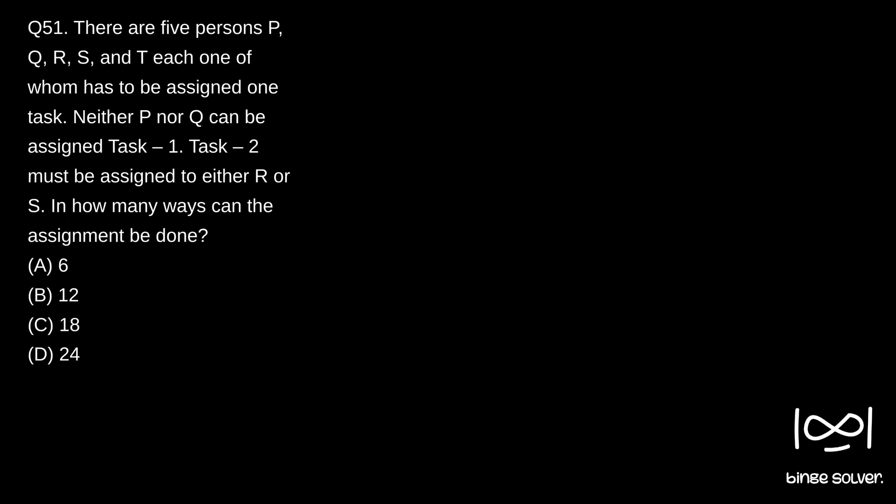Next question, question 51. There are five persons P, Q, R, S, and T, each one of whom has to be assigned one task. Neither P nor Q can be assigned task 1. Task 2 must be assigned to either R or S. In how many ways can the assignment be done? So we have P, Q, R, S, and T.